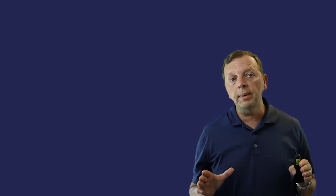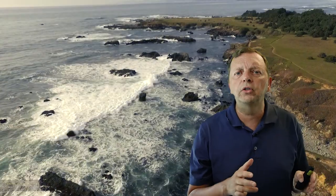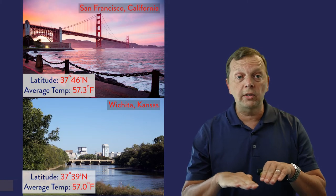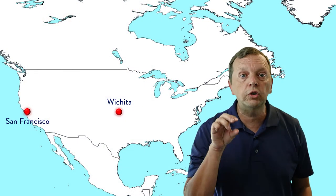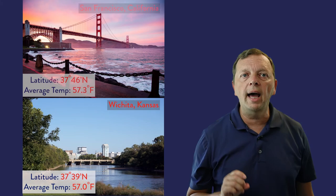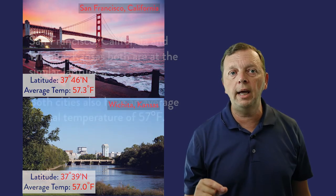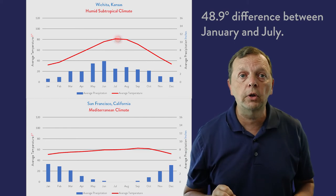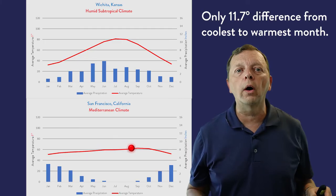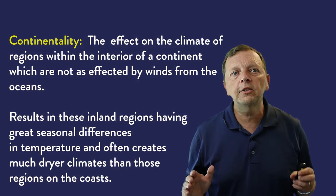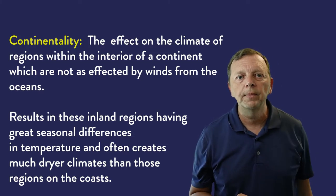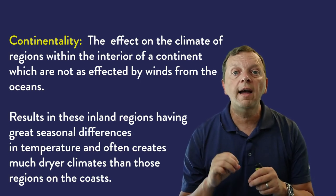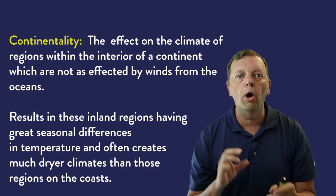Another way ocean currents impact weather is that because water heats and cools slower than land or air, places near the oceans tend to not have as much of a temperature swing. Take San Francisco, California and Wichita, Kansas — both cities are at pretty much the same latitude and both have an average annual temperature of 57 degrees. But Wichita, which is far from the ocean, has nearly a 49 degree temperature change from January to July, while San Francisco's average temperature changes by less than 12 degrees. This effect of being in the interior of a continent away from oceans is called continentality. Inland areas have much more of a temperature swing and also receive less precipitation because they're further from oceans.